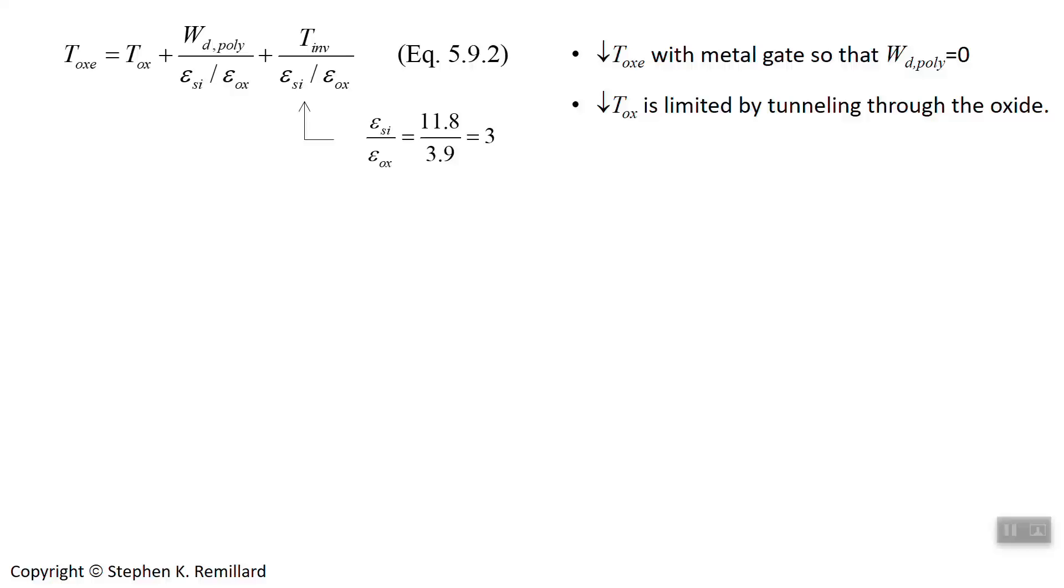We can't really make the oxide thickness too terribly small. There's a limit of a few nanometers, and then you start to get problems with tunneling between the channel and the gate through the oxide.